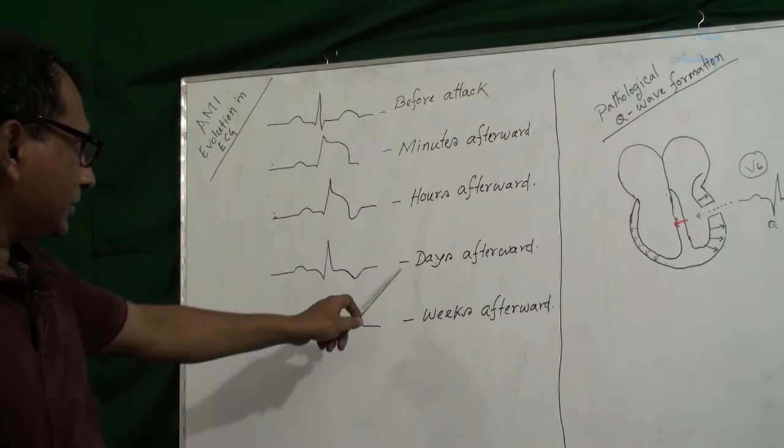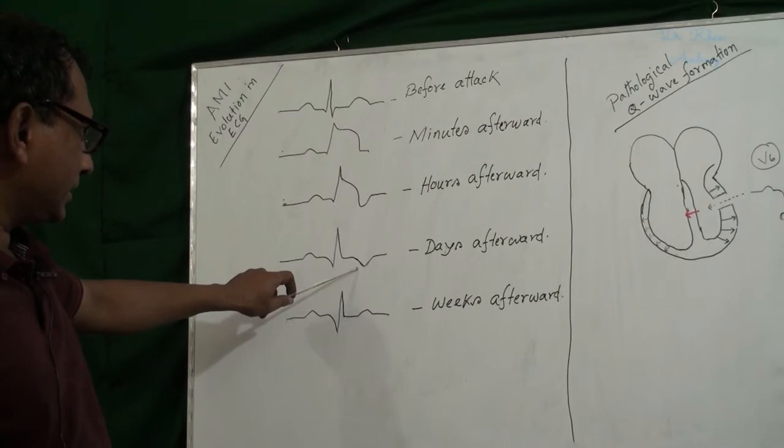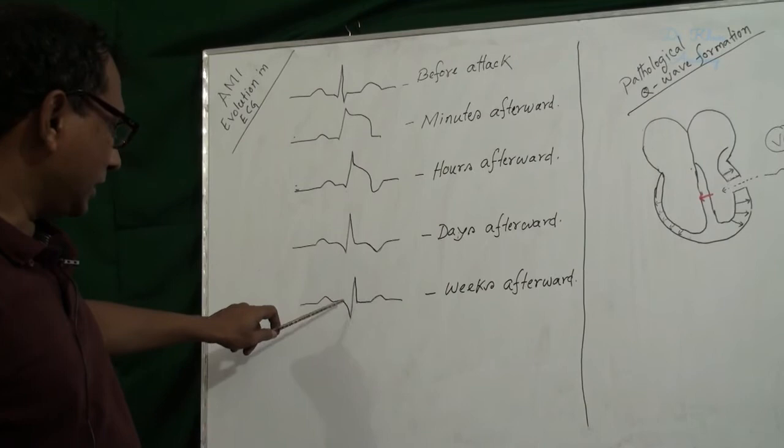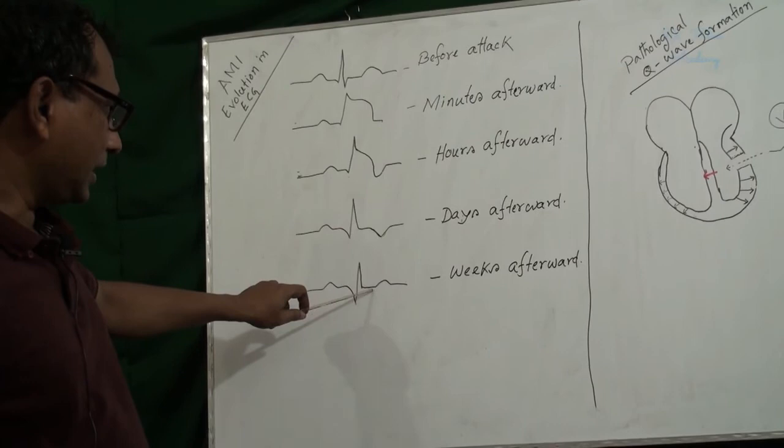Weeks afterwards, pathological Q develops and ST segment remains in isoelectric line and T remains in normal position.